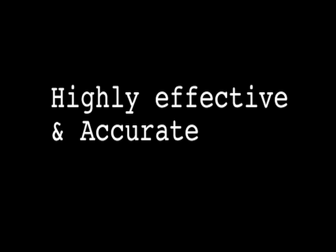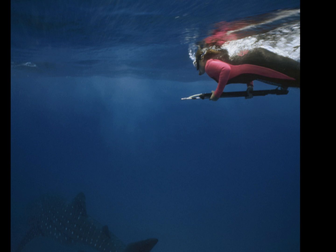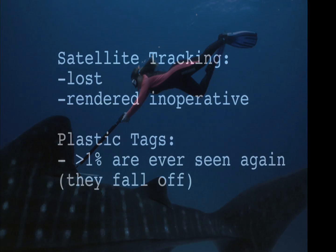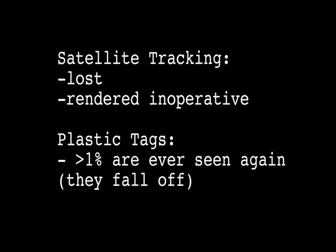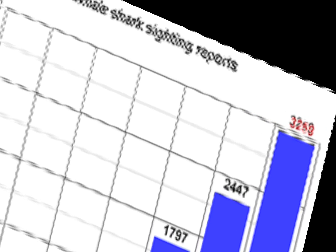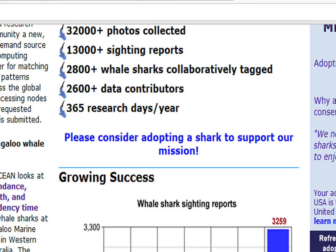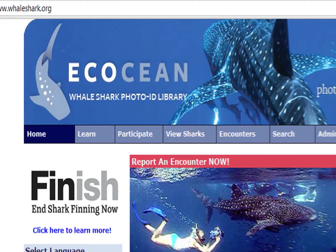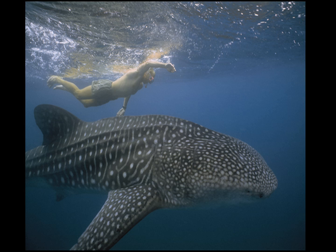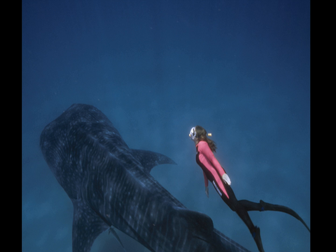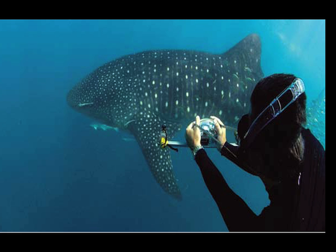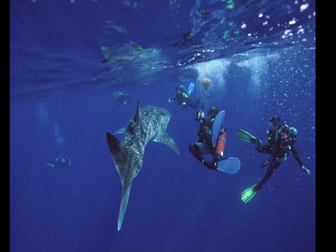Before, humans used to physically tag the sharks, but satellite tracking proved inefficient because the tags were frequently lost or rendered inoperative within weeks or a few months. With plastic visual tags, less than one percent are spotted again after tagging. The algorithm, on the other hand, has already collected more than 3,000 useful whale shark photos, tagging more than 2,800 matches. Eco Ocean's whale shark photo identification library allows anyone to upload photos for comparison and identification, helping researchers figure out migratory patterns, behavior, and how to protect them.